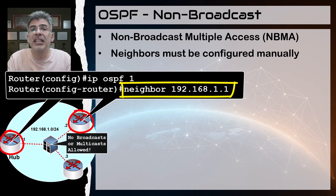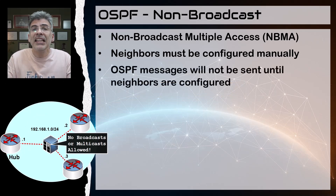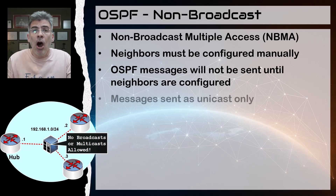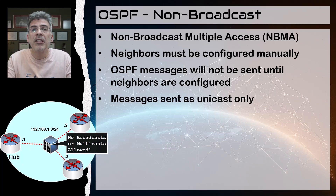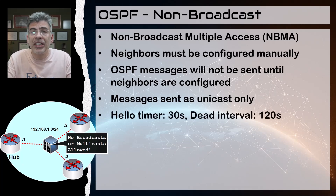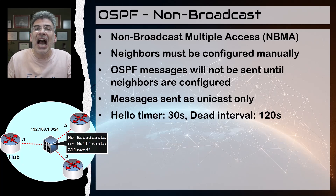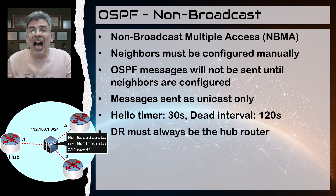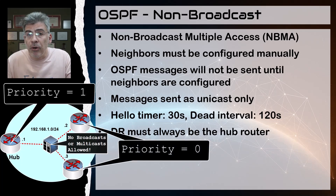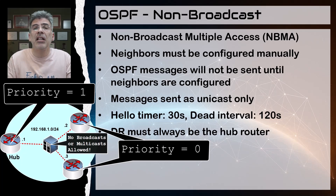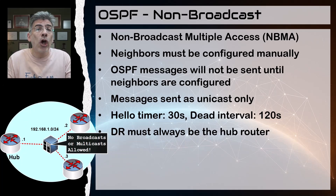Manual neighbor configuration is done using the neighbor command under OSPF configuration mode, as shown, and must be done on both sides of the link. OSPF will not send any messages until the neighbor adjacency is manually configured and established — all messages are sent as unicast based on the configured neighbor IP. The default hello timer is 30 seconds and the dead timer is 120 seconds. In a hub-and-spoke topology, the hub must always be the DR, so configure spokes with a priority of zero so they don't become DR or BDR.